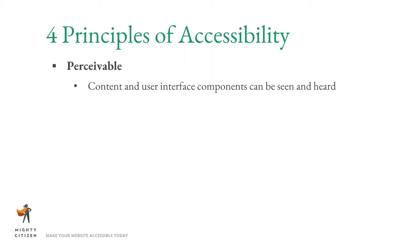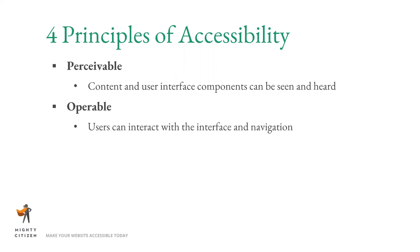The second principle is operable — anyone who wants to use the web must be able to interact with the interface and navigation. The interface cannot require an interaction that is impossible for them to perform. For example, if they are unable to use a mouse, the website cannot require hovering; if they can't use a keyboard, they must have an alternate way to use the site.